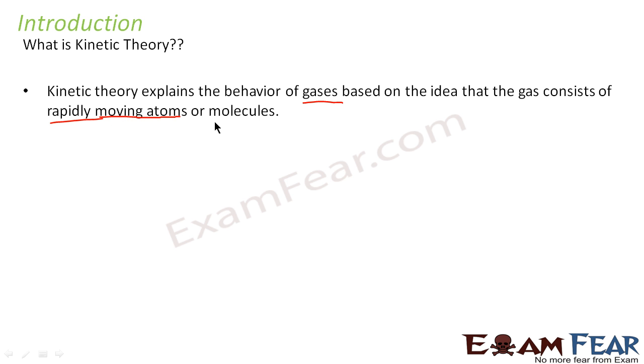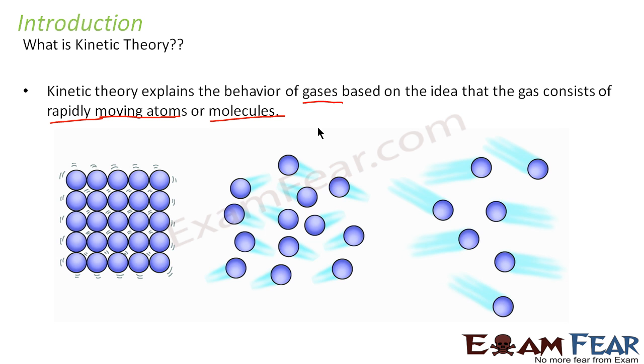So basically, kinetic theory was a theory given by scientists to explain the behavior of gases. How do gases behave? Now this entire theory is based on the idea that gas consists of rapidly moving atoms or molecules. So what do I mean when I say that gas consists of rapidly moving atoms or molecules? If you think in your primary classes you would have studied that in case of solids the molecules are very close to each other.